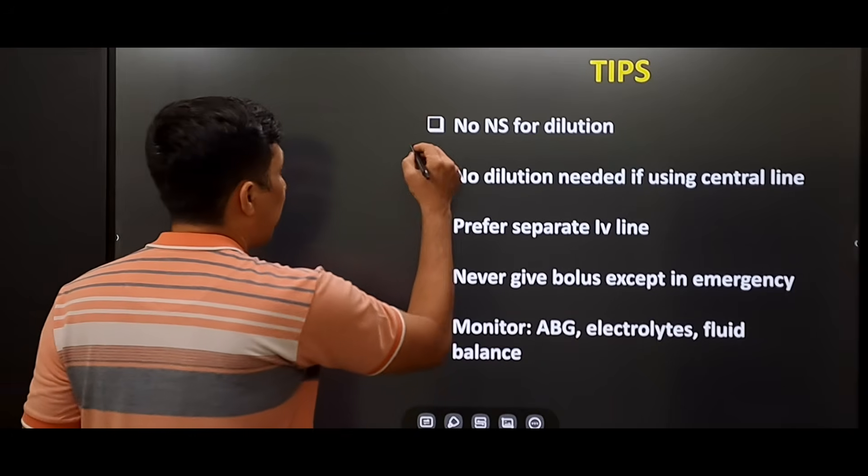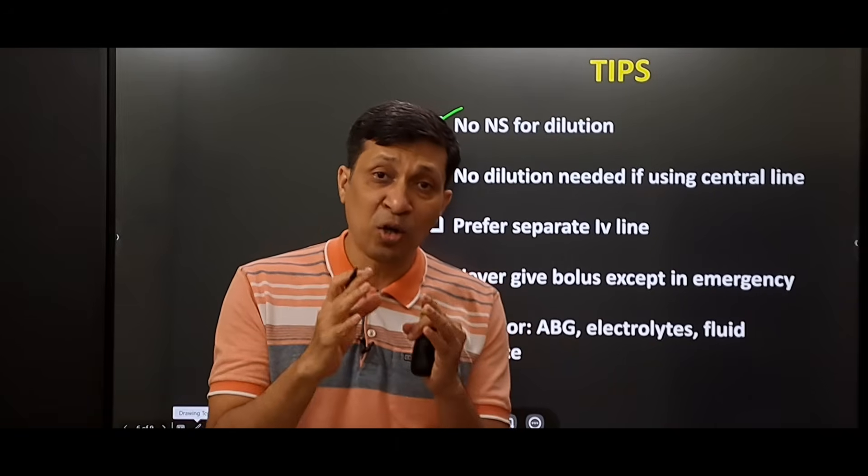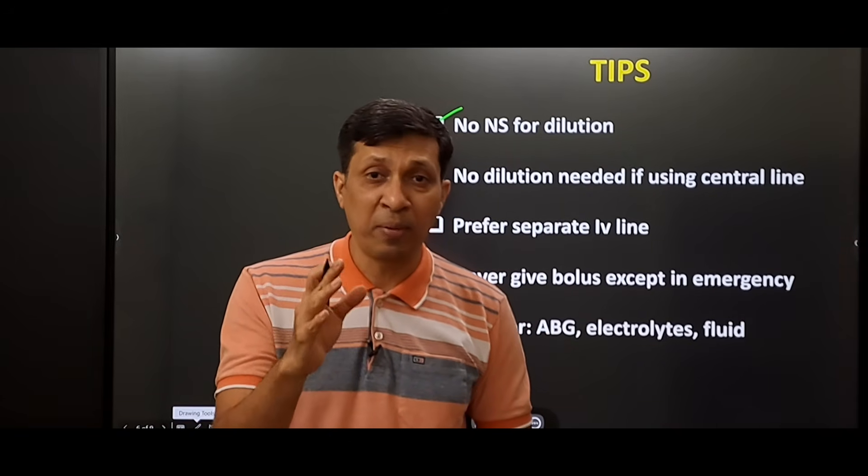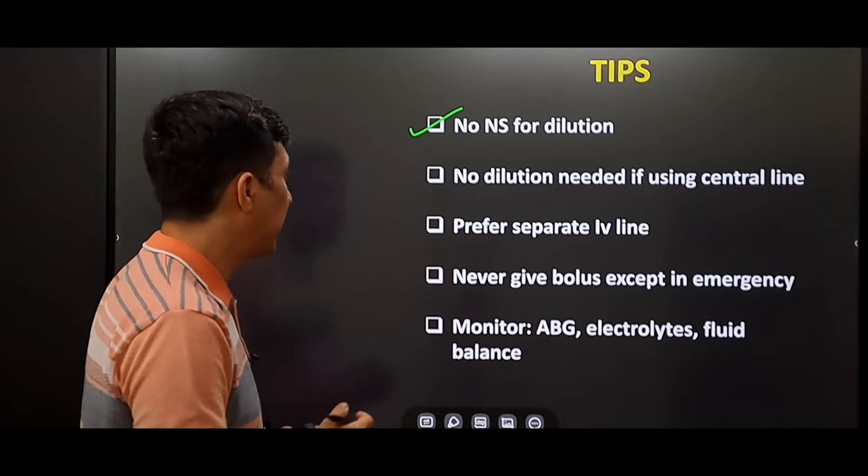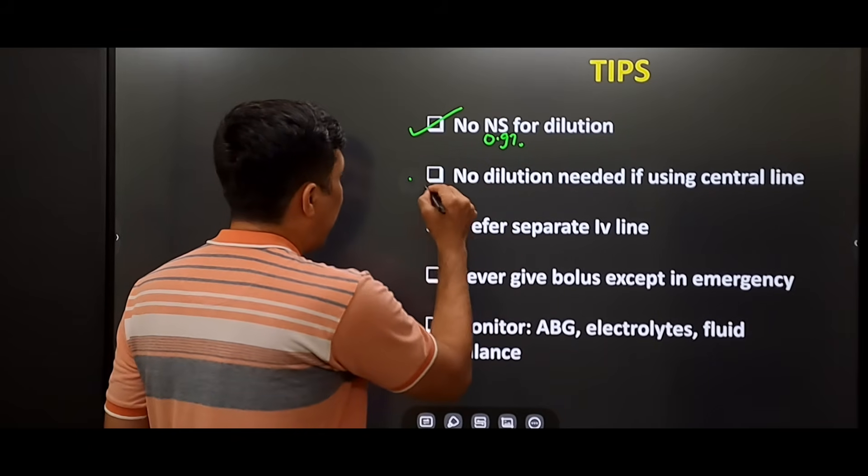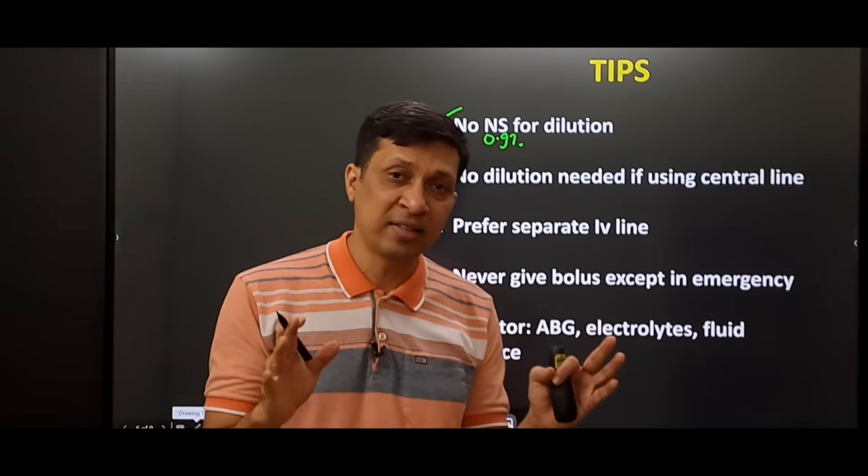First, never use normal saline for dilution because in normal saline there is a lot of chloride, and this chloride can cause hyperchloremic acidosis. So we avoid NS during dilution—that is normal saline, 0.9%. If you are giving this drug by central line, then no dilution is needed.